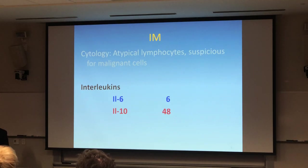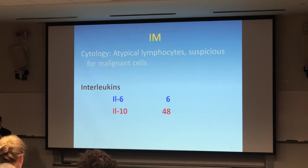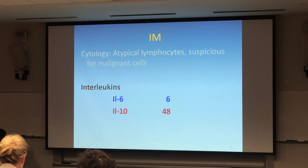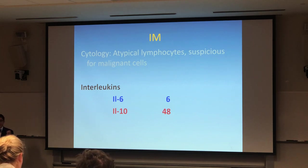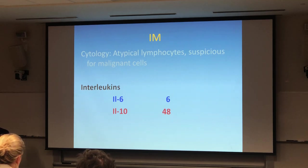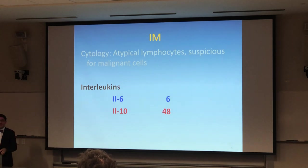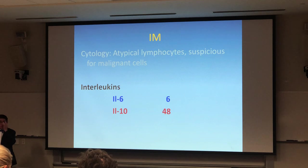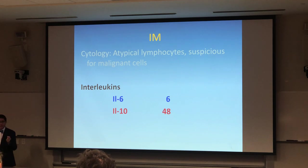IL-10 elevated in lymphoma, IL-6 in general uveitis inflammation. For a bonus question — who showed this? It was a very landmark paper. This work came out from the National Eye Institute. There was a very famous pathologist there, now retired — her name is Chi Chao Chen. That famous work showed the importance of looking at the ratio between IL-6 and IL-10: IL-10 tends to be quite elevated in lymphoma, and IL-6 in uveitic inflammation. It's not 100% proof, but it gives you a part of the picture.